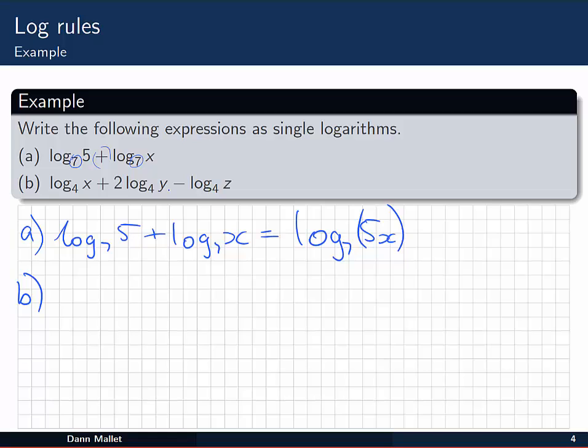In B we have a sum and a difference. Log base 4 of x plus 2 log base 4 of y take away log base 4 of z. Importantly again, all bases are the same. Here they are 4.